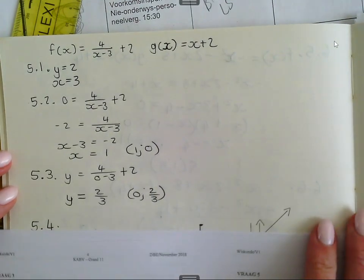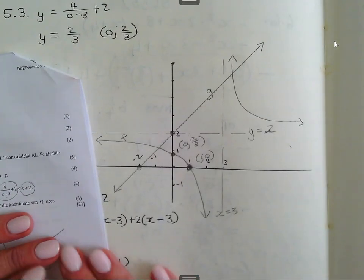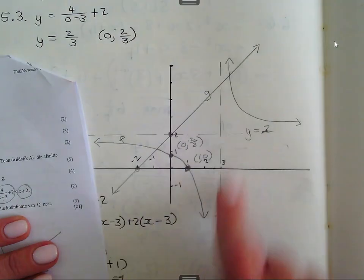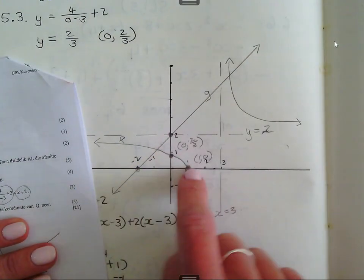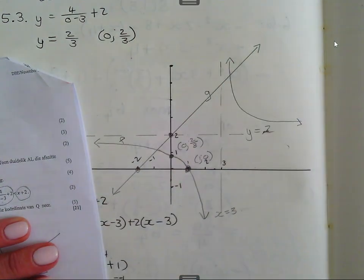5.4, skryf die grafieke, teken jy dan hom mooie hyperbole. Eerst die asymptote neer, en dan stip jou afsnitte, en dan kan jy hom hier verbind, en dan kopie jou net eindelijk oor na die ander kant toe.